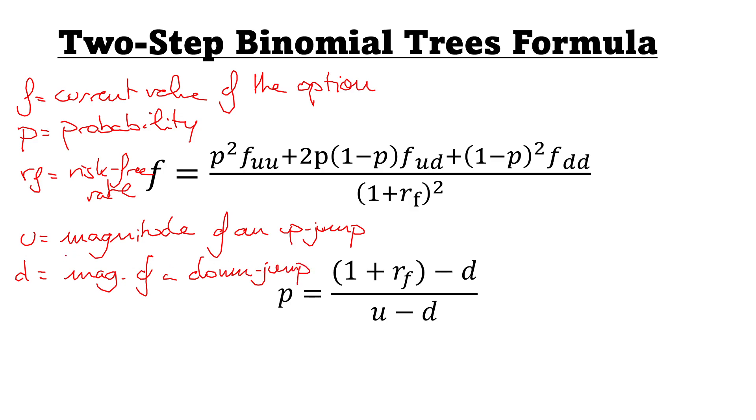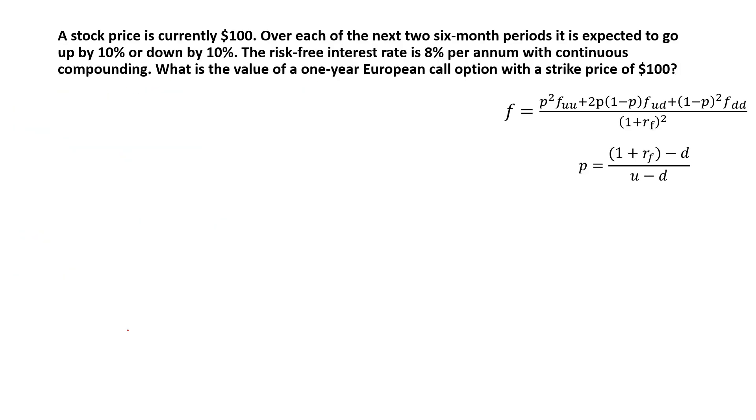So basically, U is when you go up in the binomial tree, and D is when you go down. So by how much is going up, and by how much is it going down. So let's put this into practice with an exercise.